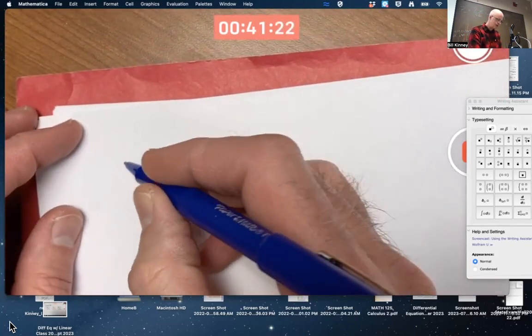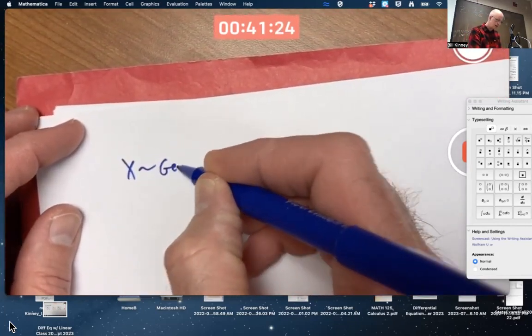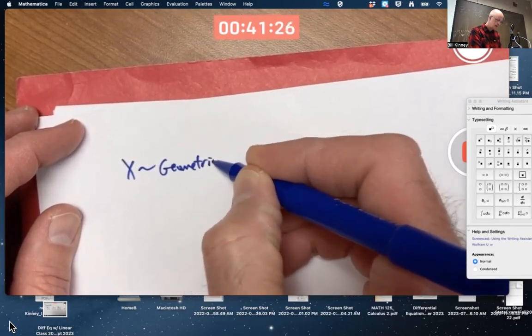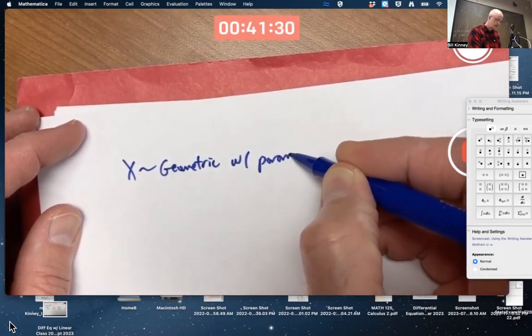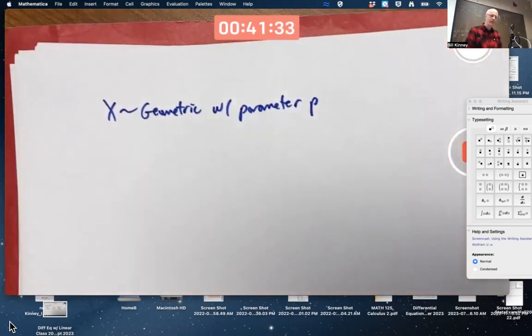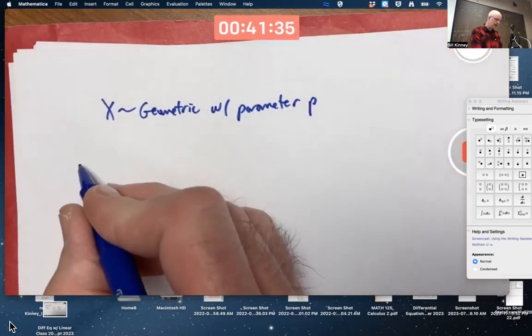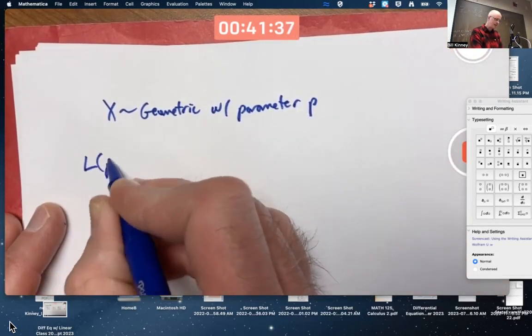So let's go back to a geometric. X is geometric with parameter P. Remember that the likelihood function is a function of the parameter.